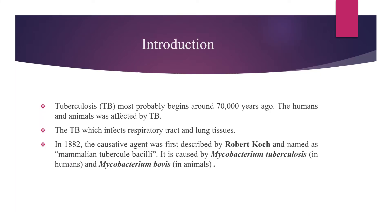Introduction. Tuberculosis mostly begins around 70 years ago. Humans and animals were affected by TB, which infects the respiratory tract and lung tissues. In 1882, the causative agent was first described by Robert Koch and named as mammalian tuberculobacilli. It is caused by Mycobacterium tuberculosis in humans and Mycobacterium bovis in animals.